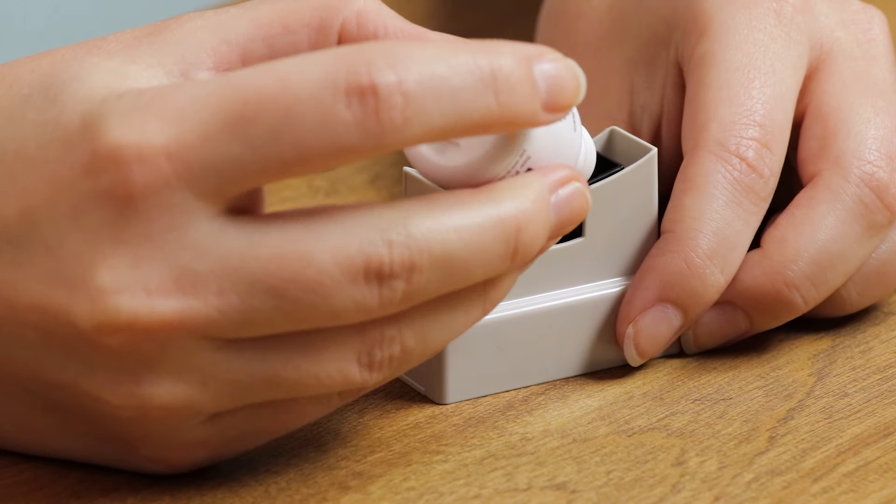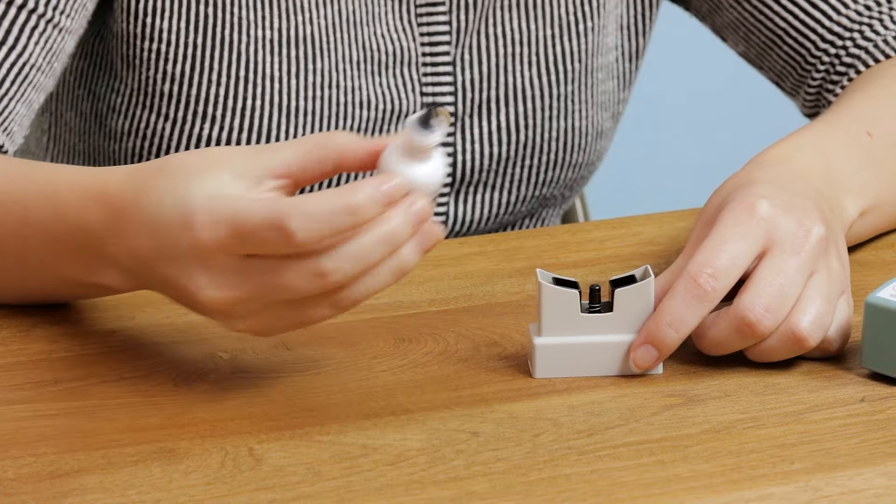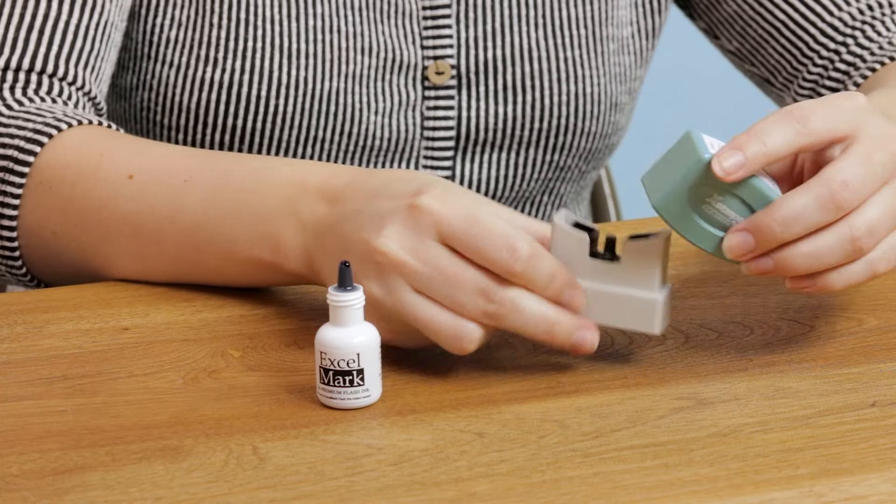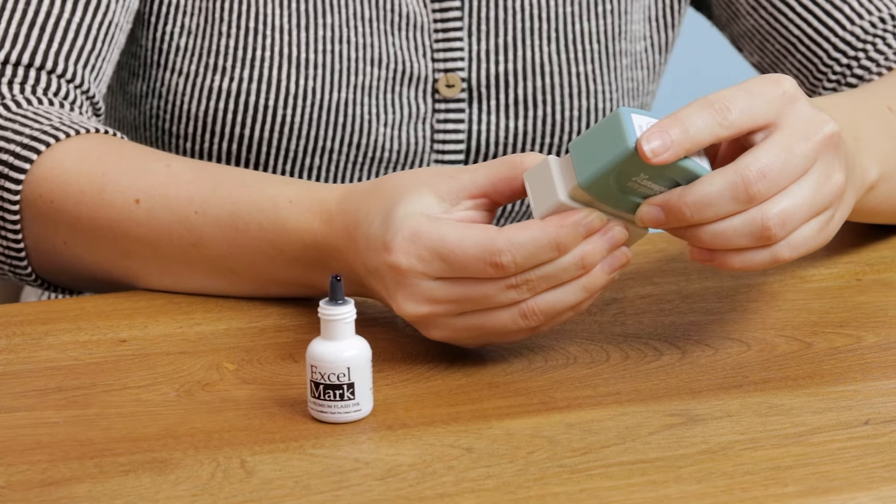Place one to two drops in each of the two ink wells. Replace the stamp handle and allow the ink to soak into the pad for several hours before using.